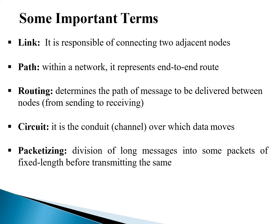In the previous lecture we learned some important terms. Before moving to today's lecture, let me briefly revise them. The first is a link. A link is a physical path used to connect adjacent nodes. Nodes are communication devices capable of sending and receiving data from one place to another. After that, we studied path — the end-to-end route between a sender and receiver within a network.